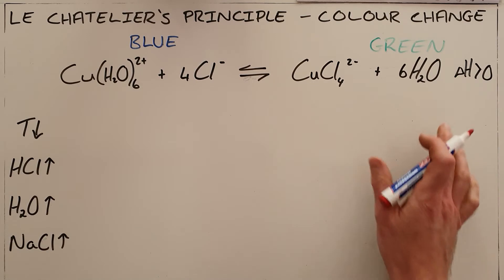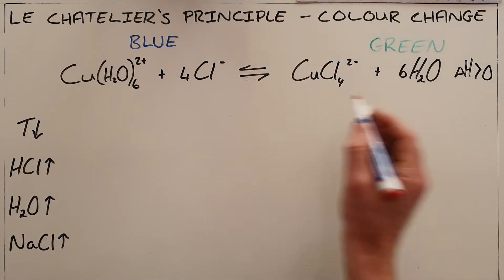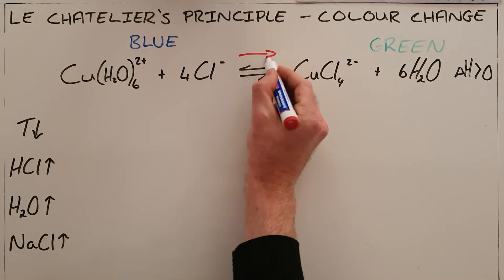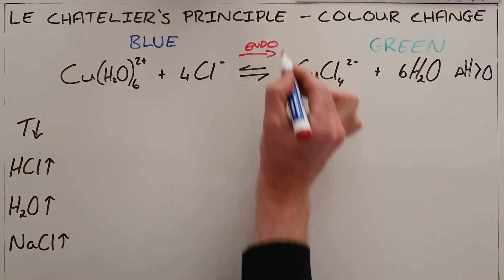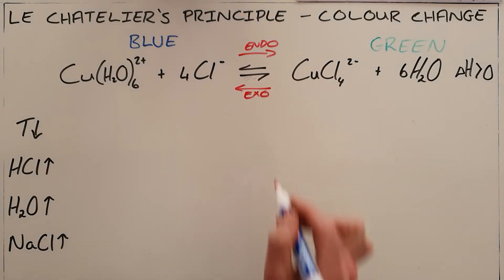The products on this side have a greenish color, and we are told that this reaction is at equilibrium. We can see that in this case the forward reaction is endothermic, which obviously then implies that our reverse reaction is exothermic.